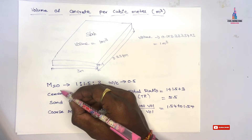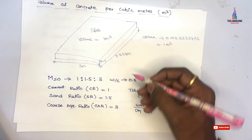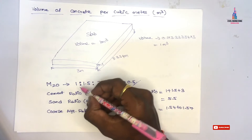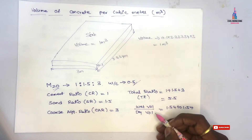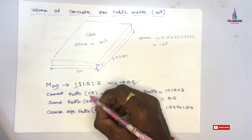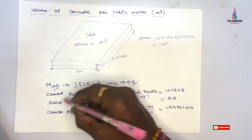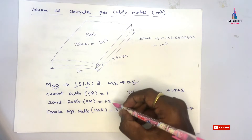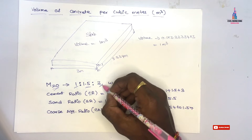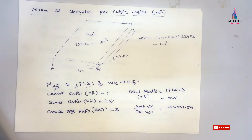I am taking M20 grade concrete, which has a mix design of 1:1.5:3. Let us consider the water-cement ratio equals to 0.5. The factor 1 indicates the cement ratio (CR), the factor 1.5 is related to sand (SR), and the factor 3 is related to the coarse aggregate ratio (CAR).